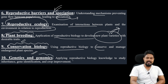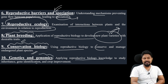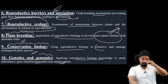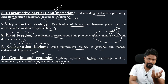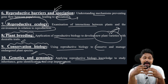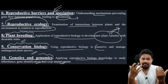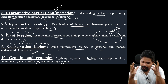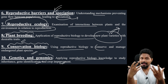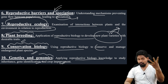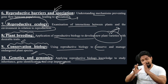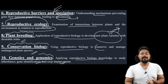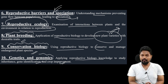Finally, genetics and genomics — applying reproductive biology knowledge to study inheritance, gene identification, and crop improvement programs. When we learn about reproductive biology at the genetic level, we learn about genomics: inheritance patterns, gene identification, and crop improvement programs. This includes hybrid quality, vigor quality, and plants with new superior characteristics. That's how reproductive biology is very important and you can incorporate it.